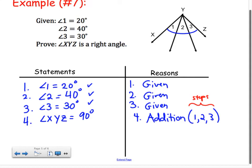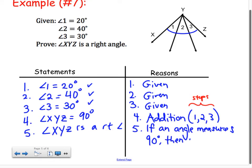So, we've added the measures 20 plus 40 plus 30 and gotten 90. And now we can say that angle XYZ is a right angle. And the reason we can do that is because if an angle's measure is 90 degrees, then it is a right angle. If an angle measures 90 degrees, then it is a right angle. Now, which step would I be referring to here? Well, the step where I said that the angle measures 90 degrees, so that would be step 4. So, that's my reference for that step. And we're done.